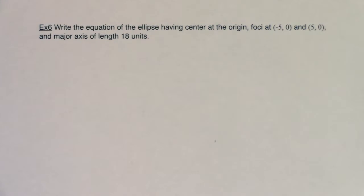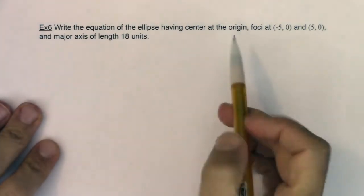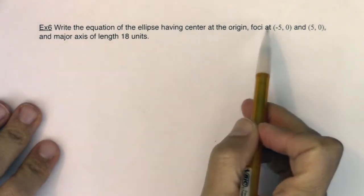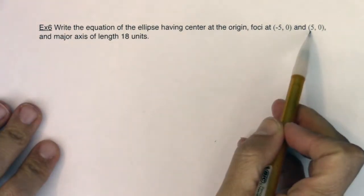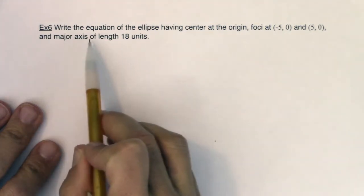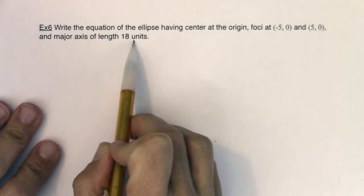Hey Mount 31, welcome to example 6. So we are told, write the equation of the ellipse having a center at the origin, foci at (-5, 0) and (5, 0), and a major axis of length 18 units.